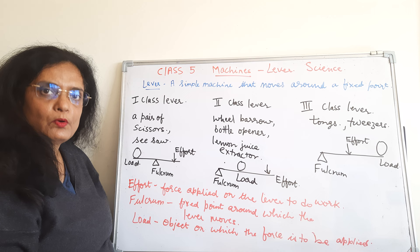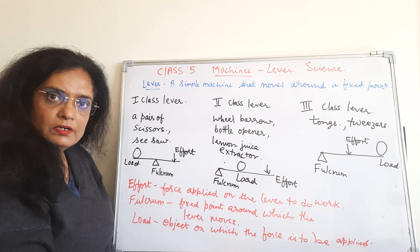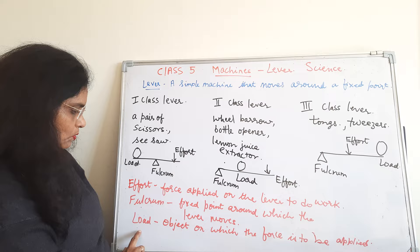A lever has three parts: effort, fulcrum, and load. Effort is the force applied on the lever to do work. Fulcrum is the fixed point around which the lever moves, and load is the object on which the force is to be applied.